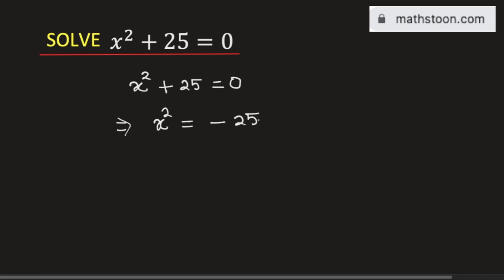Now we will take square root on both sides. By doing so, we will get x is equal to square root of negative 25.